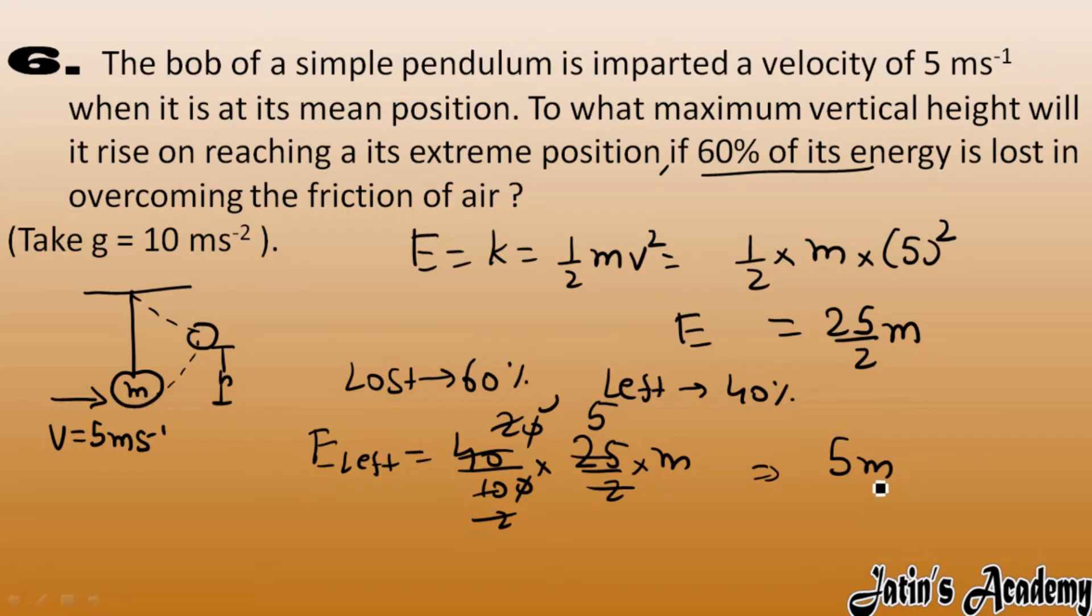Now this whole energy is converted into potential energy. So according to conservation of energy, kinetic energy at mean position is equals to potential energy at extreme position. Kinetic energy we have 5 m and potential energy formula we have mgh because we have to calculate the value of height. Okay, so here m and m cancel out and here h we got it as 5 by g.